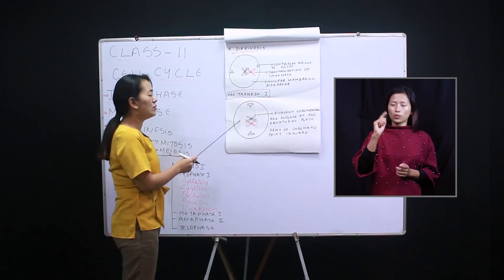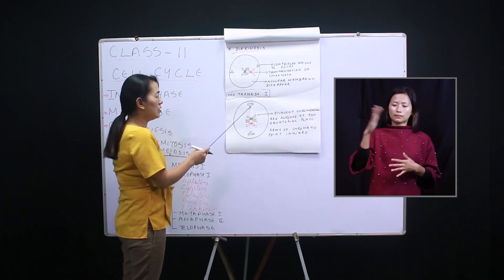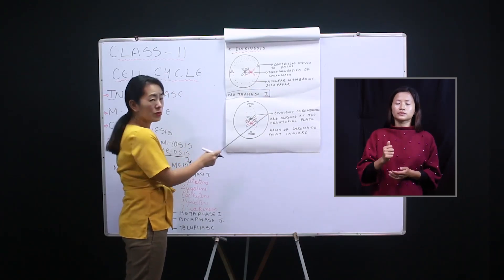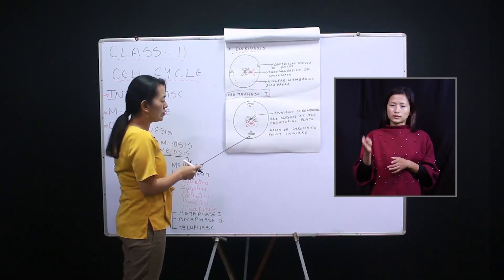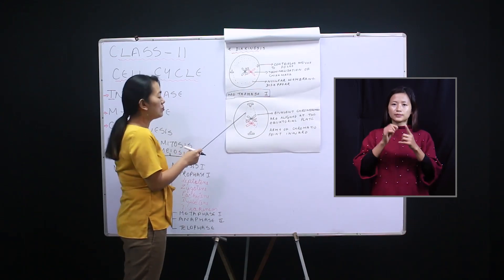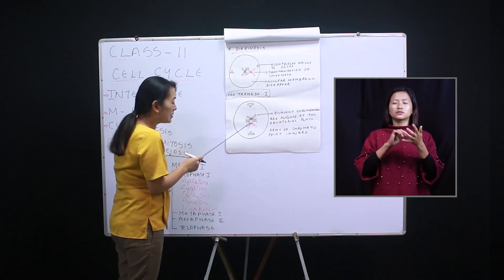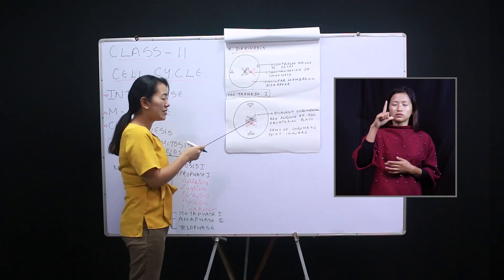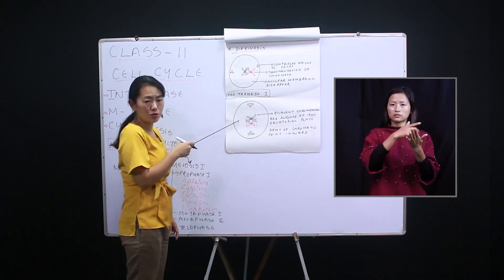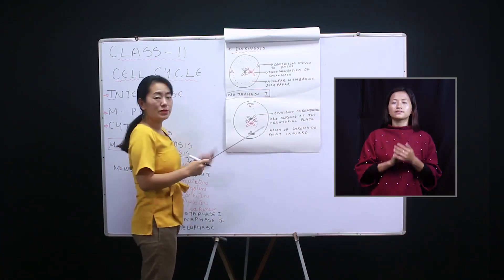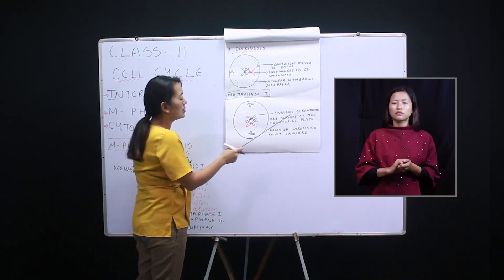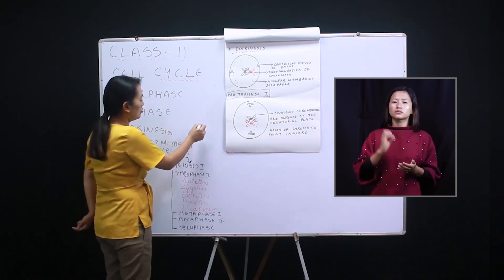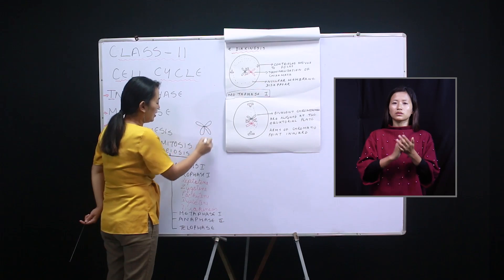In metaphase one, the nuclear membrane has completely disappeared and the centrioles have moved to the opposite poles. The spindle fibers go and hold the homologous chromosome chromatids in the middle. The bivalent chromosomes — bi meaning two, two junctions — are aligned at the equatorial plate. The arms of the chromatids point inward at this stage.